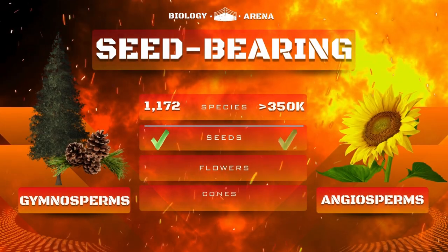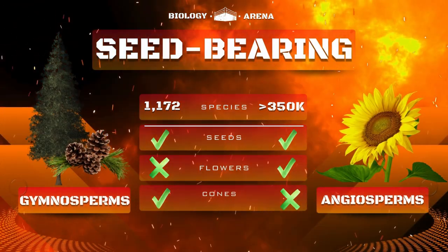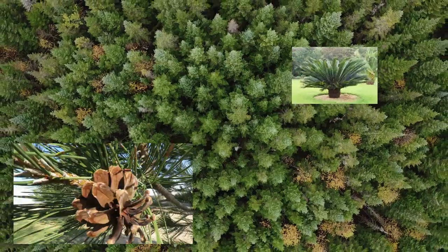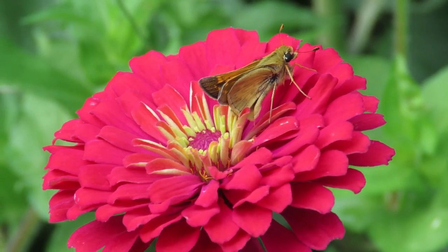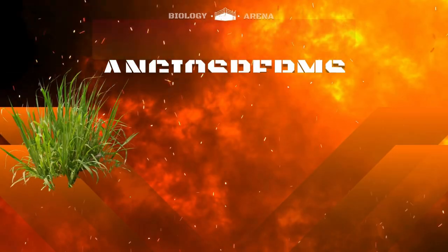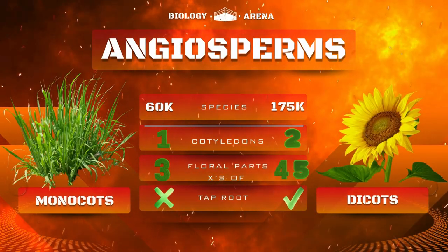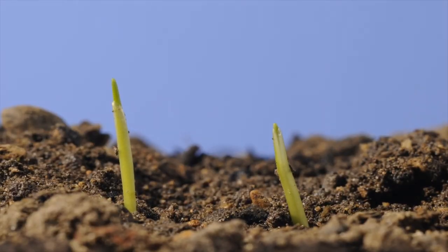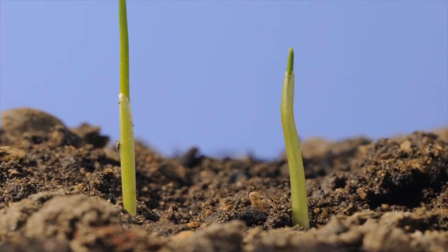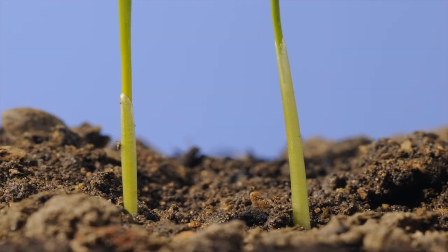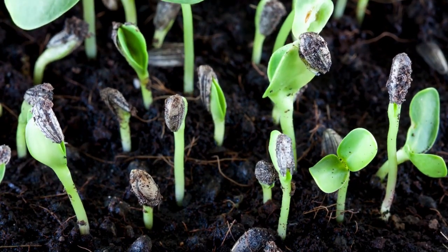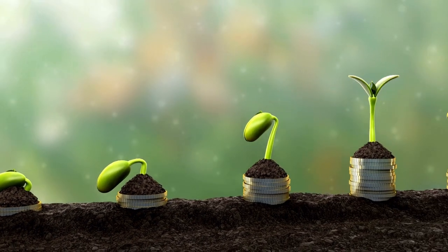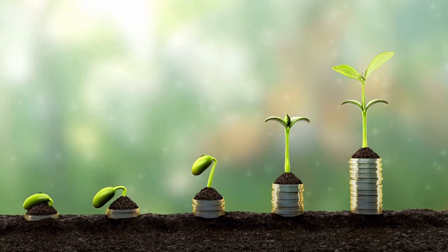The seed-bearing vascular plants can be characterized into two specific groups. The gymnosperms, or cone-bearing plants, like conifer trees, pines, junipers, cycads, and ginkgo trees. And your angiosperms, which are all the flowering plants. We can divide angiosperms into monocots and dicots. When angiosperms germinate, monocots only produce one cotyledon, like grasses, sedges, and orchids. The other group is the dicots — plants that germinate with two cotyledons, like peppers, cucumbers, and tomatoes.